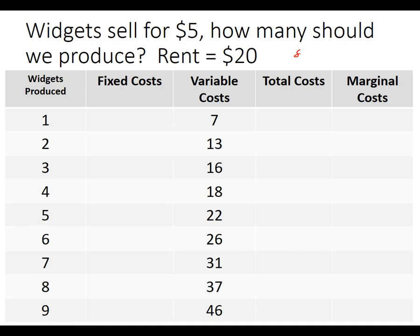We're confronted with a problem: we sell widgets for $5 each — that's the price. Total revenue is quantity times price, so Q times $5. We've got some quantity listed here, and the rent is going to be $20. How many should we produce?